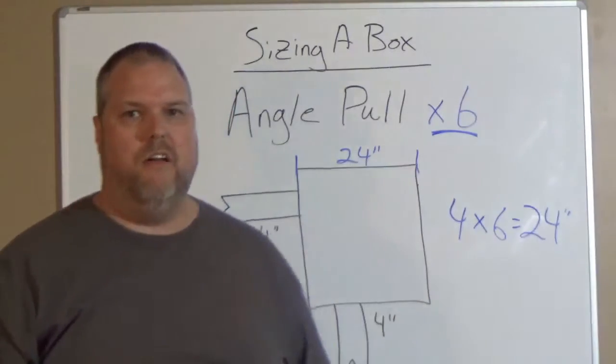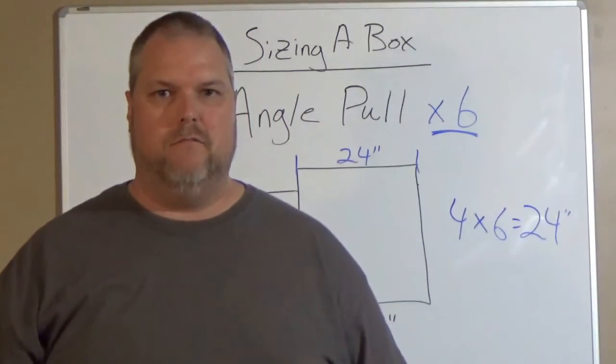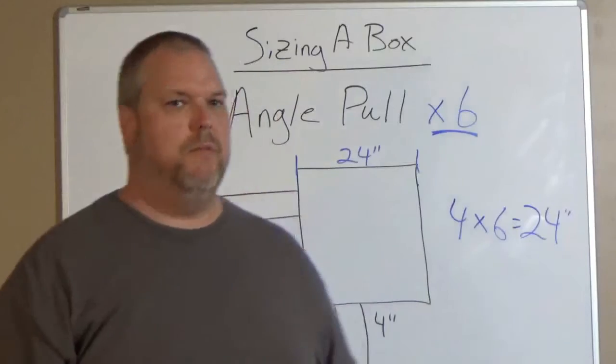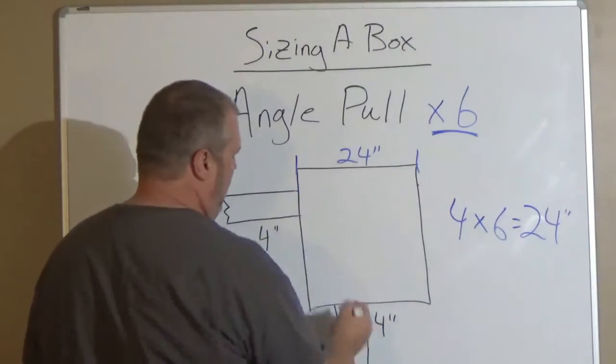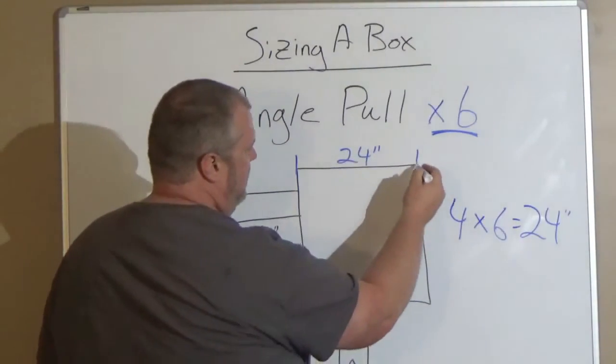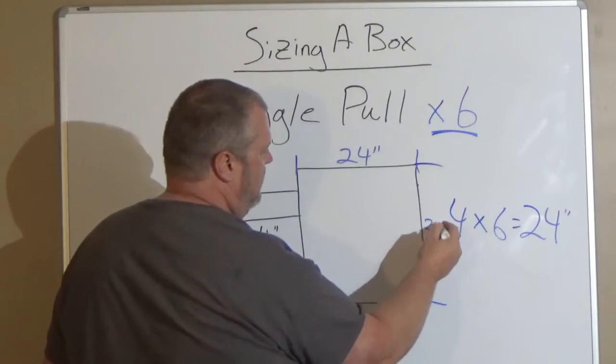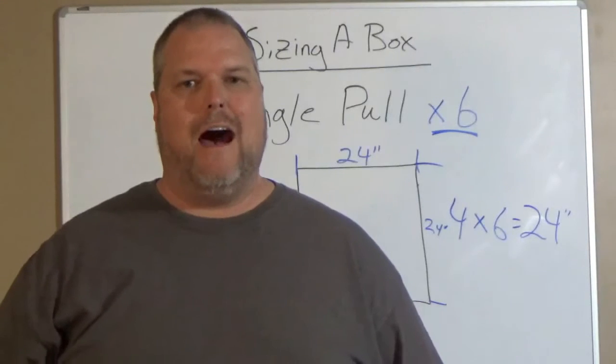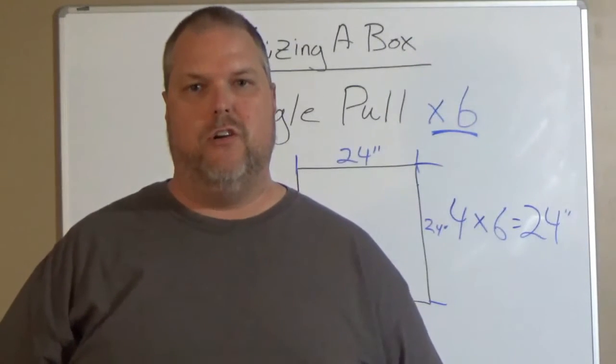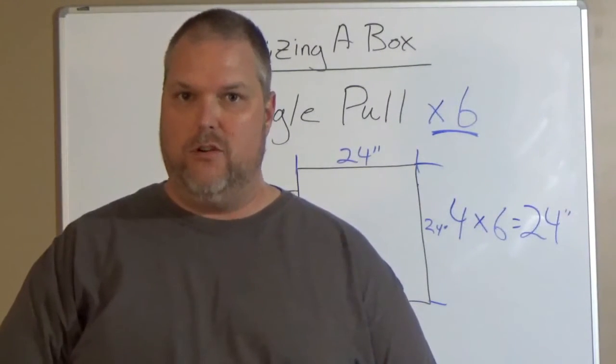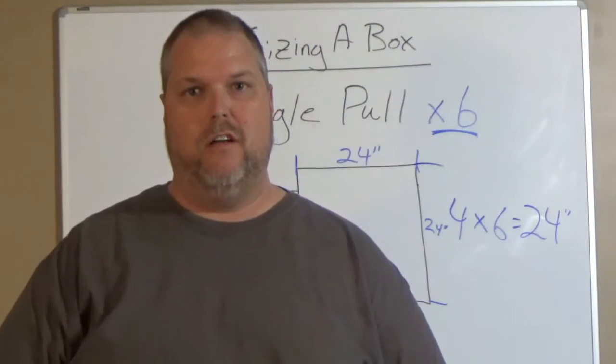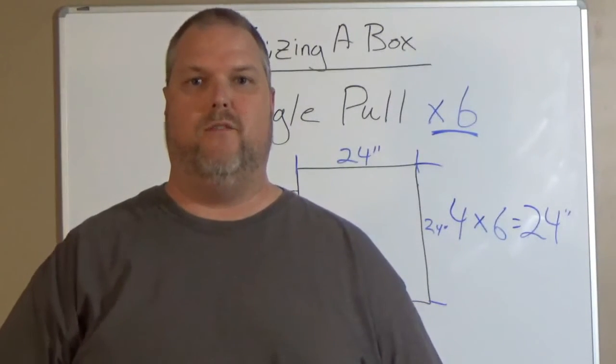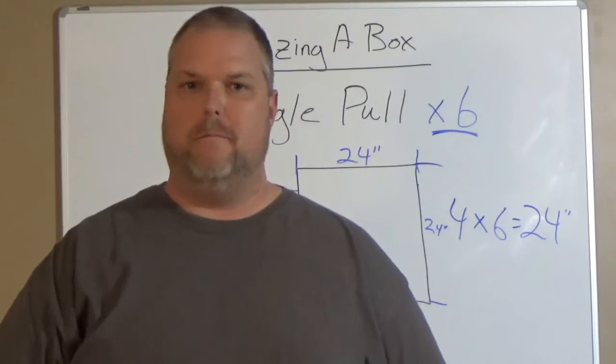Now if we're only putting one conduit in, it's very simple to complete this, because if I know I have 24 inches here, that means I have to have 24 inches here. So if I'm running a 4-inch conduit, I have to make sure that I put a 24 by 24 junction box in, period.